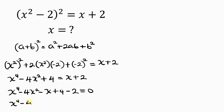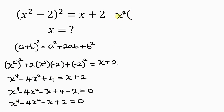Simplifying further, we have x⁴ - 4x² - x + 2 = 0. Our next step is to factor out x² from the first two terms, since x² is common. x⁴ divided by x² is x², and 4x² divided by x² is 4, giving us x²(x² - 4) - x + 2 = 0.